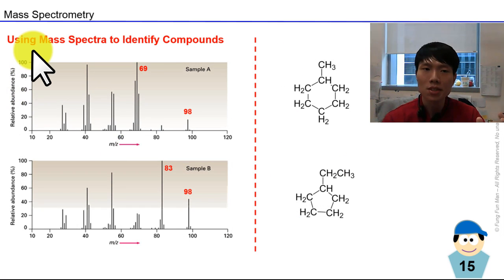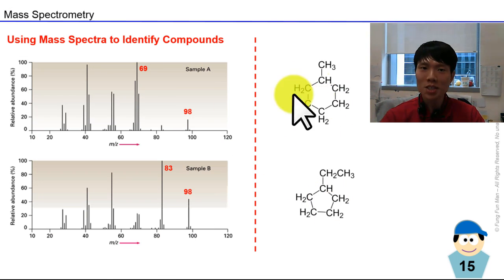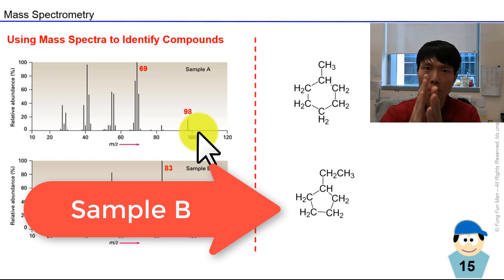Now let's practice using mass spectra to identify compounds. We have sample A and sample B, and these are the two potential identities. They have the same chemical formula, same molecular weight, same mass, but they differ in structural formula - different connectivity between the atoms. How do we tell which is which? They have the same molecular weight, so the molecular ion peak is the same at 98 - you can't tell much from that.